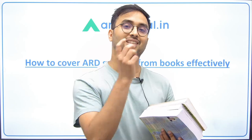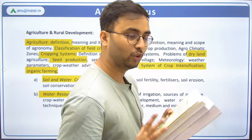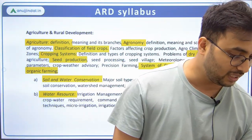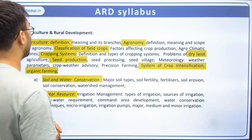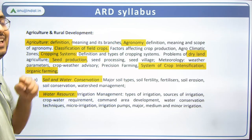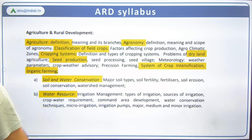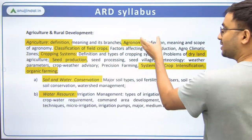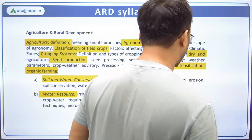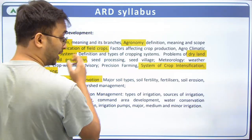Before discussing how to effectively use these books, let me give you an overview of the ARD syllabus directly from NABARD's notification. The first chapter covers agricultural definition, meaning, and branches. Then comes agronomy as the second chapter, followed by classification of fields and factors affecting crop production. Cropping systems is our next chapter, then agro-climatic zones, then dry land agriculture, and then seed production — which is an important topic.